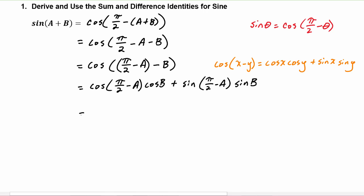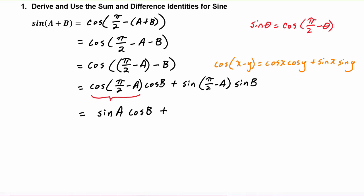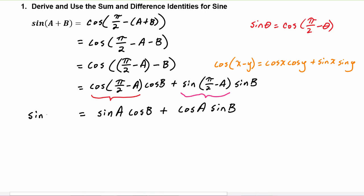Now we can use a co-function identity: cosine of (pi over two minus a) equals sine of a. We take the cosine of b directly down, plus sine of (pi over two minus a), which we replace using the co-function identity with cosine of a, and then sine of b comes right down. This gives us the sum identity for sine: sine(a + b) = sine a cosine b + cosine a sine b.